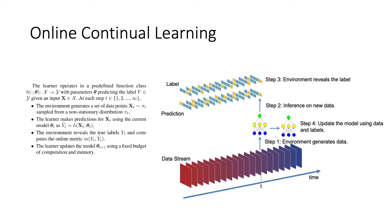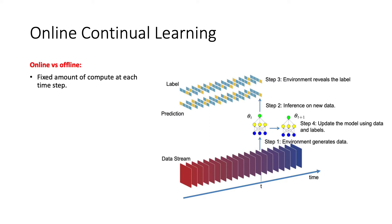In online continual learning, the model performs inference and learning continually from a stream of data. At each time step, the environment generates a set of data from a possibly non-stationary distribution. Given the newly generated data, the model first predicts their labels. Then the environment reveals the true labels for the new data. Finally, the model updates itself using previous data and labels. Unlike the offline counterpart that allows infinite amount of computation at each time step, online continual learning only allows a fixed amount of computation for a model update.